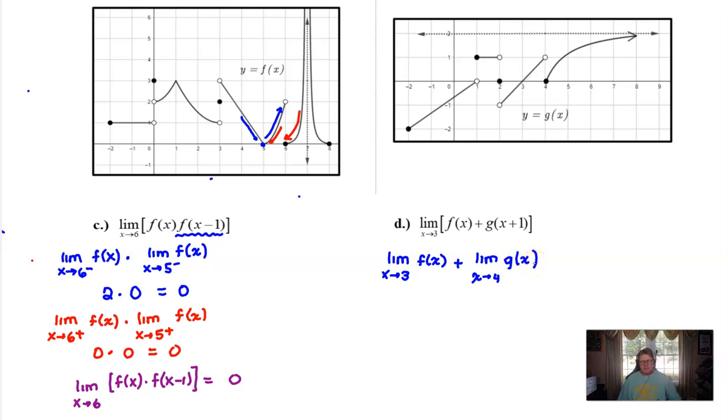Now once we start looking at the limit of f of x as x approaches three, immediately we see does not exist, which means we're going to go into one-sided limit mode. Let x approach three from the left, and I'm going to have a y value that's approaching positive one on the f of x curve. Now, I got to use the g of x graph. Let's let x approach four from the left. Upon doing that, I'm going to arrive at a y value of one, and so I get two for that one-sided limit.